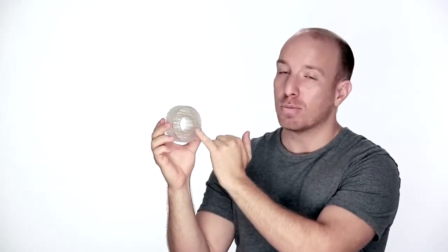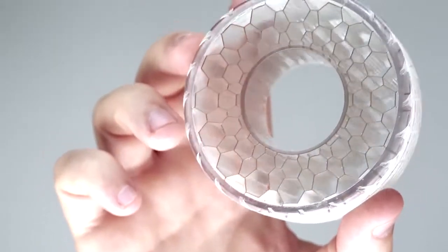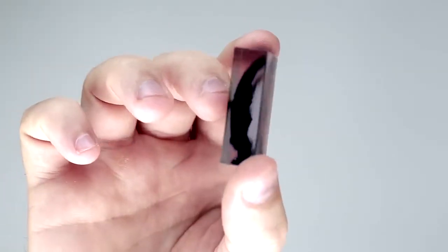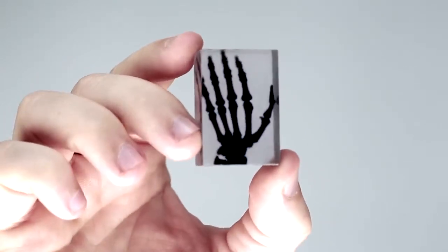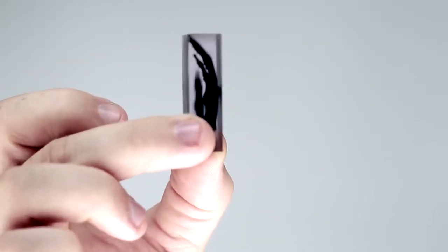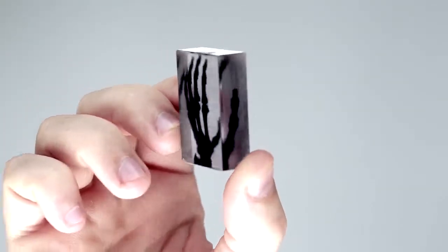Another nice example is this 3D printed wheel where you can see the details, this honeycomb structure inside the wheel. And if you have a Connex multi-material 3D printing system, you can mix the VeroClear material with a number of other materials in the same 3D printing process.